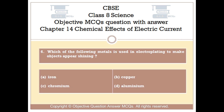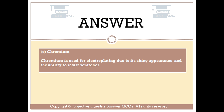The right answer is Option C — chromium. Chromium is used for electroplating due to its shiny appearance and the ability to resist scratches.